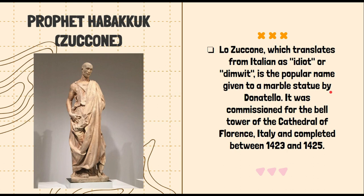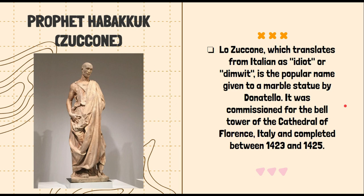The last artwork we have is The Prophet Habakkuk, also known as Zuccone. Zuccone, which translates from Italian as 'idiot' or 'dimwit,' is the popular name given to this marble statue by Donatello. The Feast of Herod was made of bronze, while this one is made of marble. It was commissioned for the bell tower of the Cathedral of Florence, Italy, and completed between 1423 and 1425.